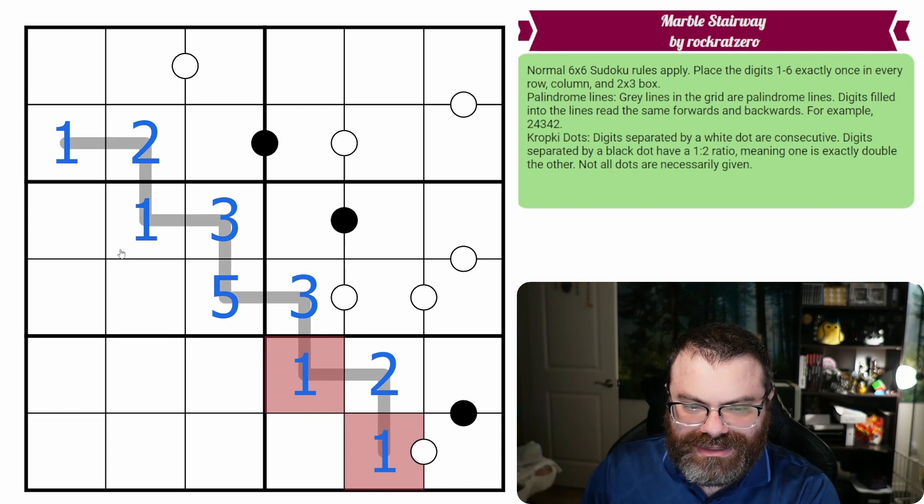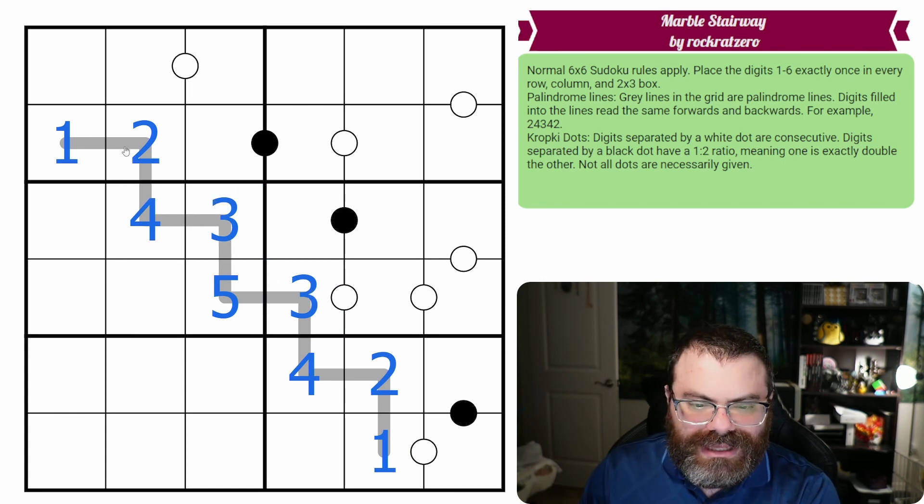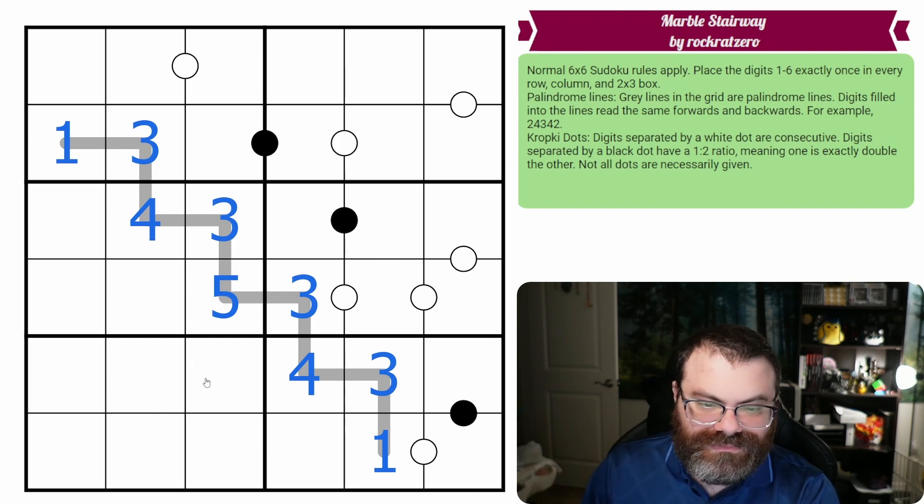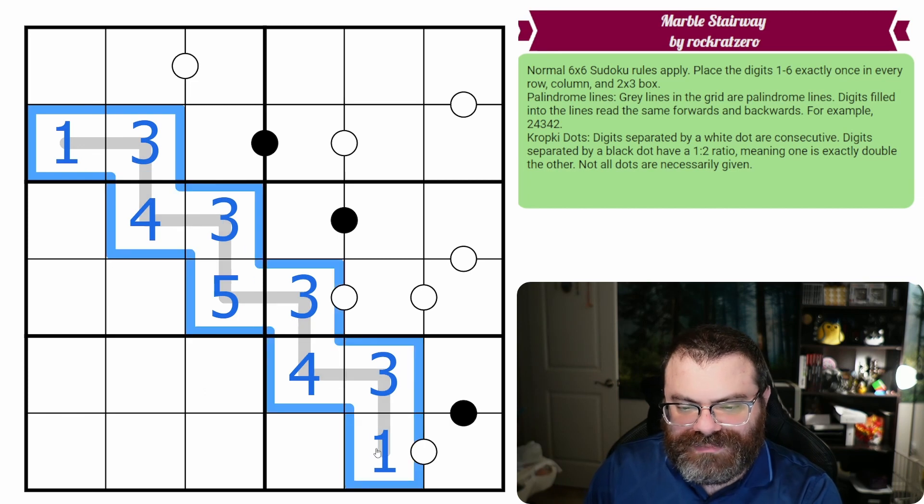I'm not trying to give you the correct solution, just a way it could be filled. Let's change that to 4. You can believe me that you can repeat digits. Let's make these 3s. If I read this forwards, it's 1, 3, 4, 3, 5, 3, 4, 3, 1. And if I read it backwards, it's 1, 3, 4, 3, 5, 3, 4, 3, 1, right? So it needs to read the same forwards and backwards.